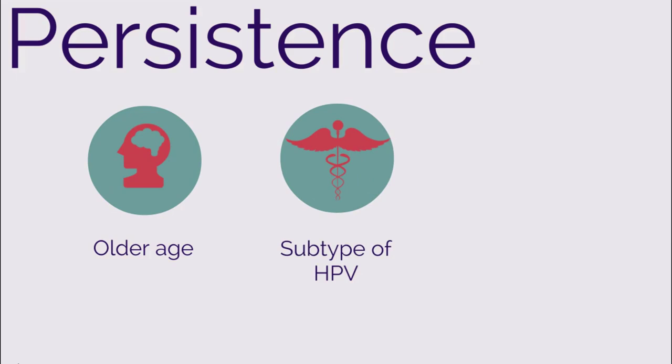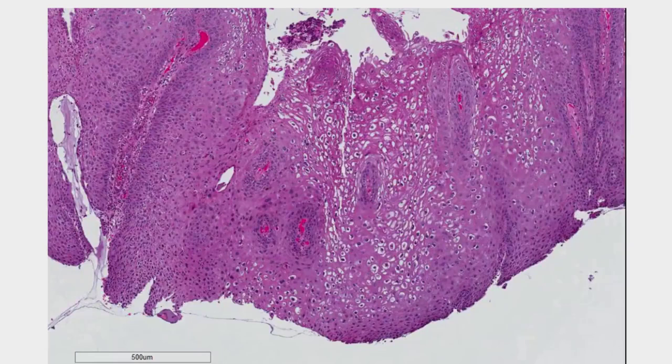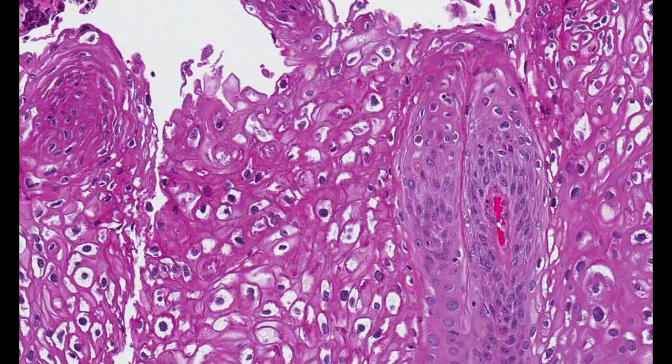Let's go back to our patient. Because her pap smear shows LGSIL, she undergoes colposcopy and a biopsy is obtained. This is the histopathology from her cervical biopsy. This is consistent with CIN1 from the Bethesda classification system, or LSIL from the LAST (Lower Anogenital Squamous Terminology) system. For our patient, this is considered a low-grade change, with mild atypical cellular changes in the lower one-third of the epithelium. Zooming in, koilocytes are commonly seen — they have nuclear enlargement with a halo. Most of these lesions regress on their own.